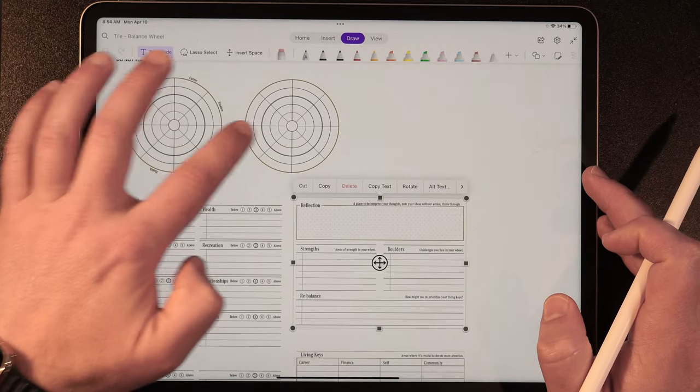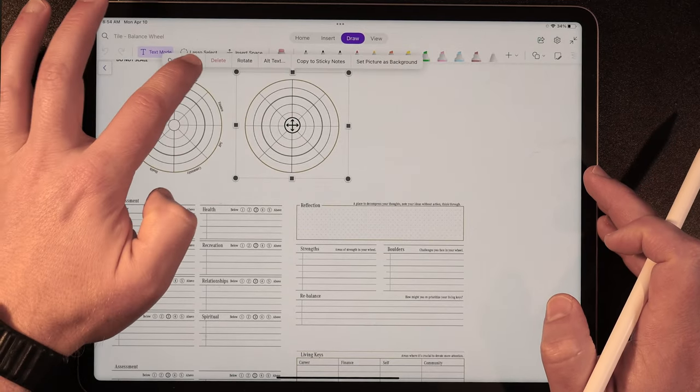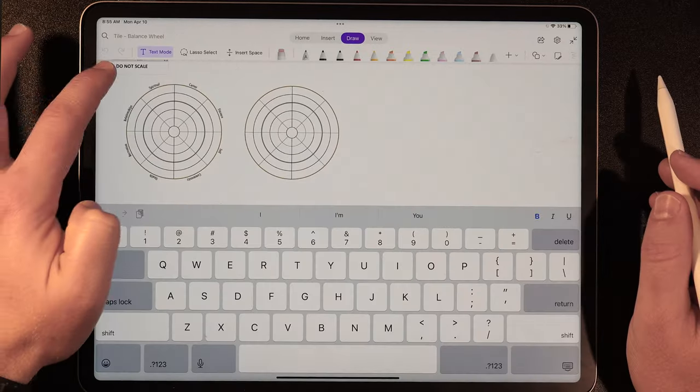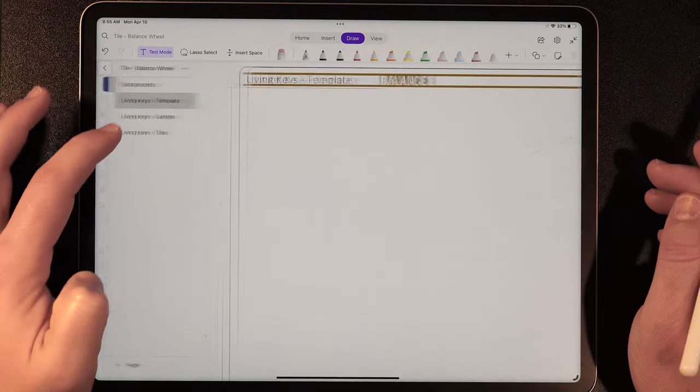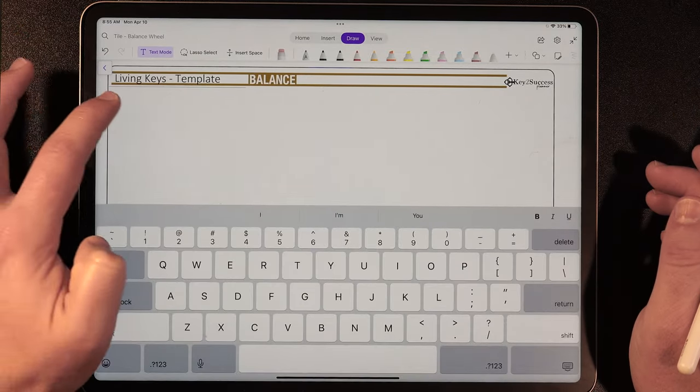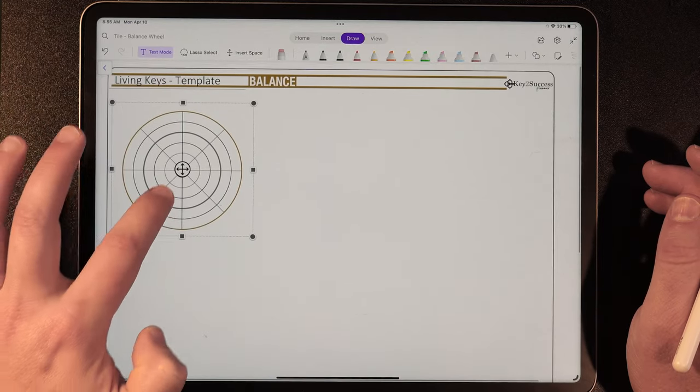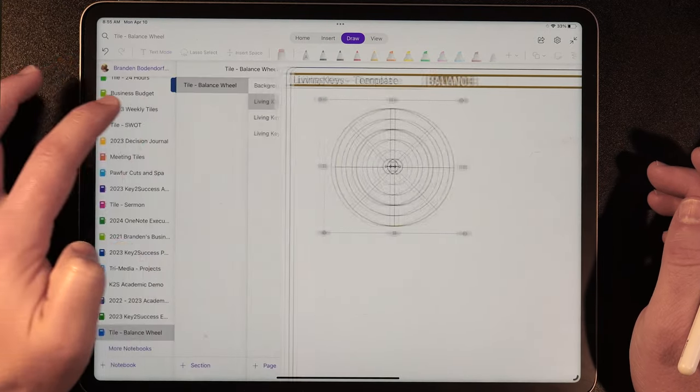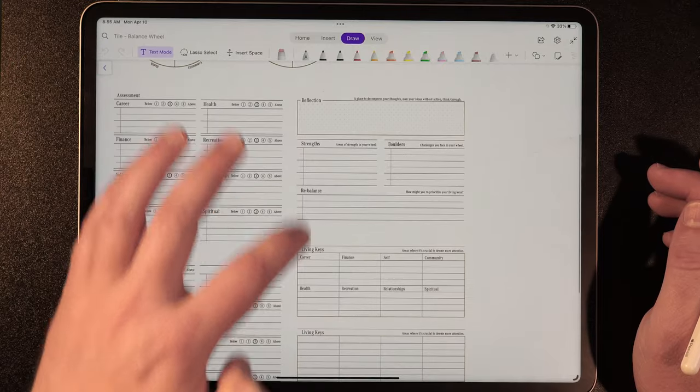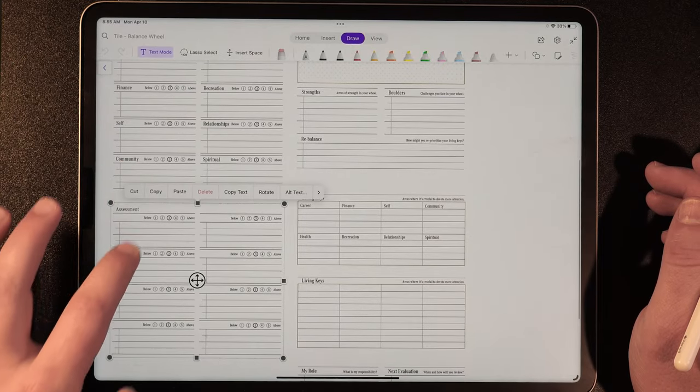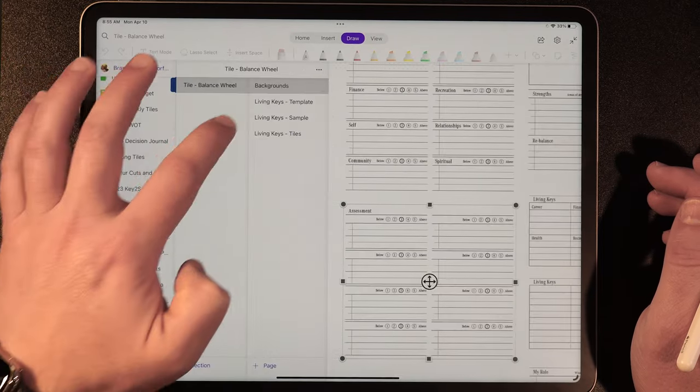These are all individual graphics and we can go ahead and we can copy any one of these graphics. So we can go ahead and copy this tile and we can jump into our template. And then from here, I can tap on the template and hit paste.